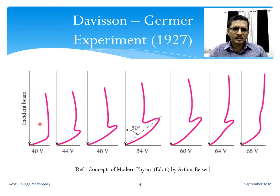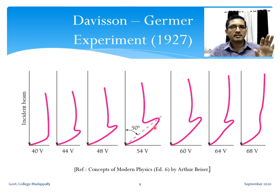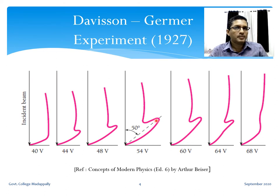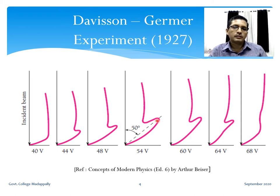This type of variation — a decrease, an increase, and then a decrease — is typical of diffraction patterns, where intensity varies with angle. This is an indication that the electron beam is undergoing some diffraction in the nickel crystal.